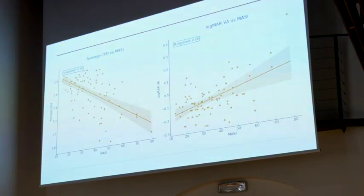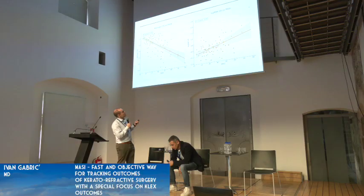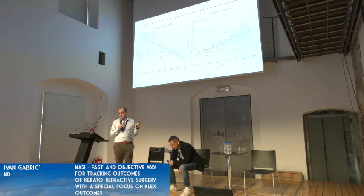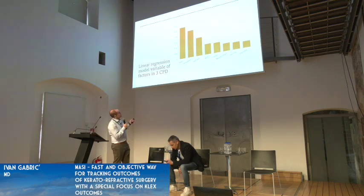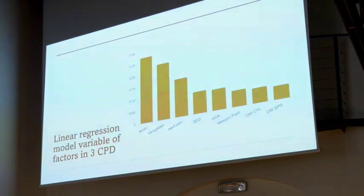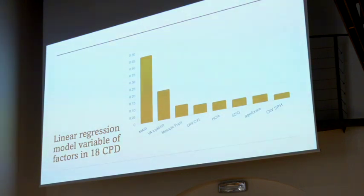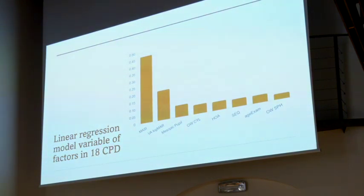We tried some LASSO regressions. For average CPD — when you take all four values and average them into a weighted score — MASI was responsible for 36% of the score, while LogMAR was only responsible for 26%. For the low frequency at 3 CPD: MASI 27%, LogMAR 25%, age at exam 15%, spherical equivalency and HOA below 10%, and everything else pretty much unimportant. But most patients are not complaining about the low-frequency contrast. They complain about the high frequency. What happens when you look at 18 CPD? MASI is then responsible for 47% of the score.